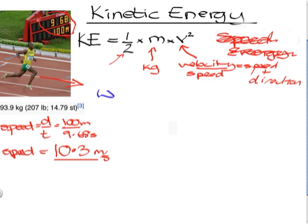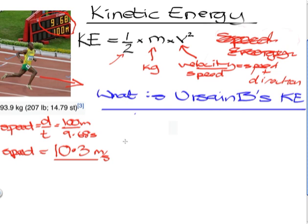So what is Usain Bolt's kinetic energy? Well, dead simple. All we have to do is follow the recipe. Kinetic energy is 1/2 times Usain's mass. Now this is from Wikipedia, I don't know how they know this. We'll just call that 93.9.